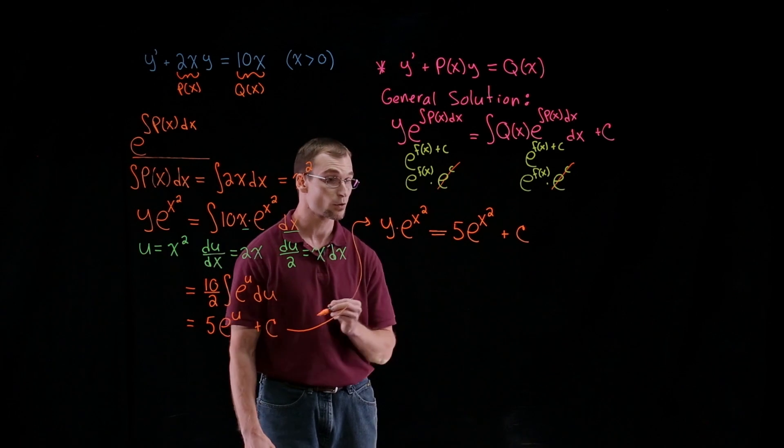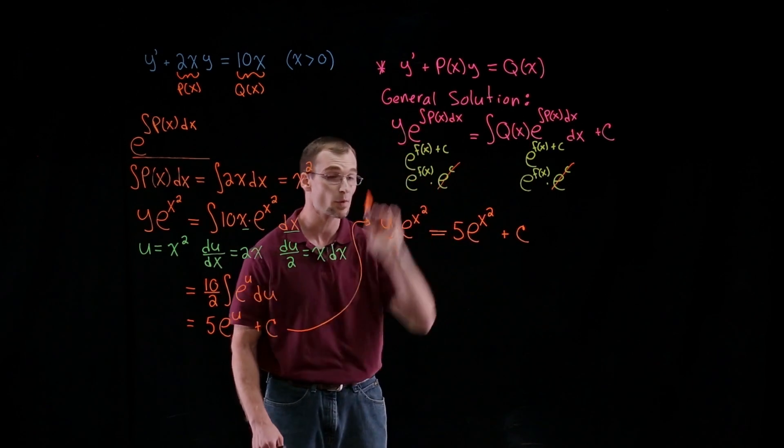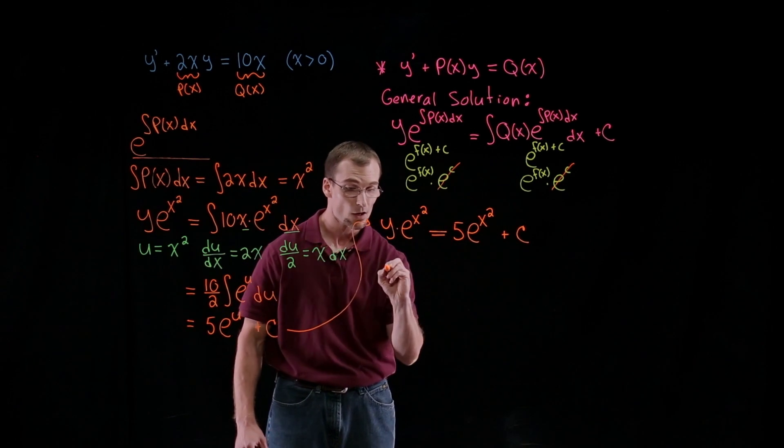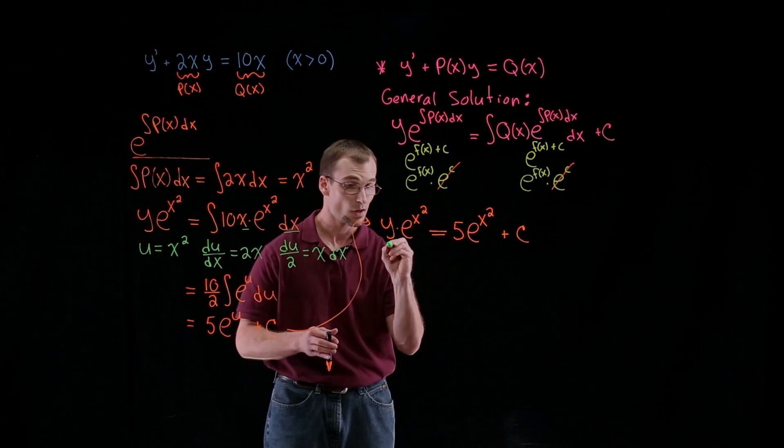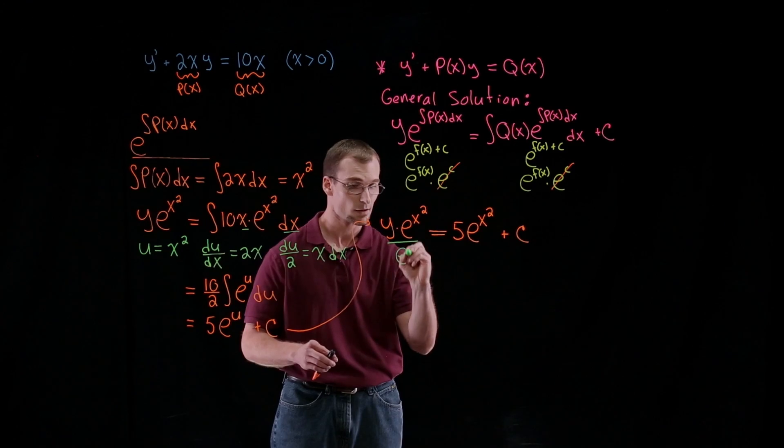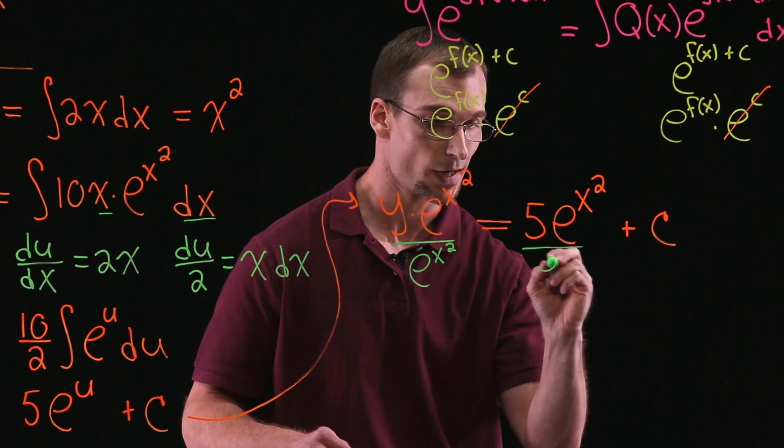So what we want to find is the general solution. Now, keep in mind this is just this formula, one form of the general solution. We are going to solve this explicitly in terms of y. So we're going to take our y to get it by itself and divide through by this term e to the x squared. And dividing all the way through, divide by e to the x squared and divide by e to the x squared.